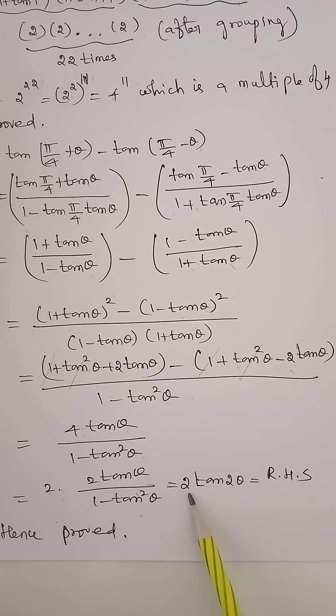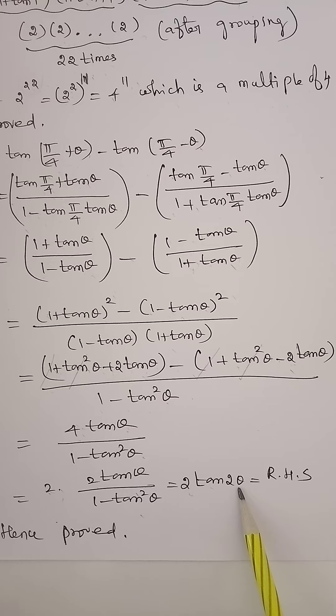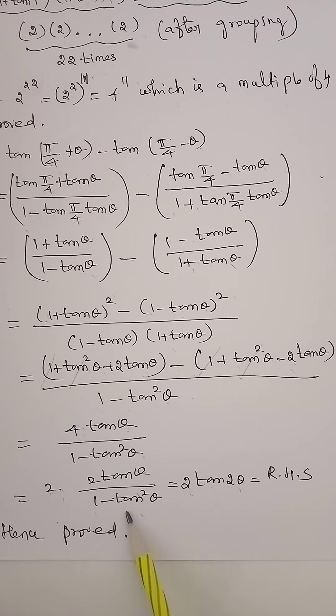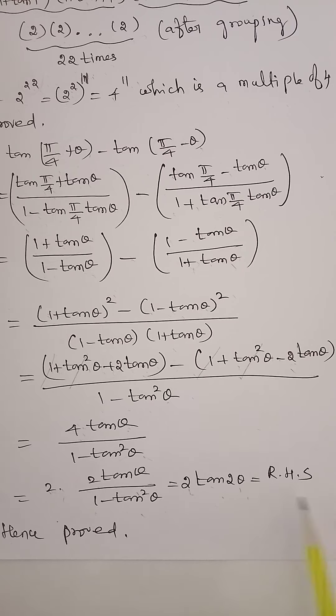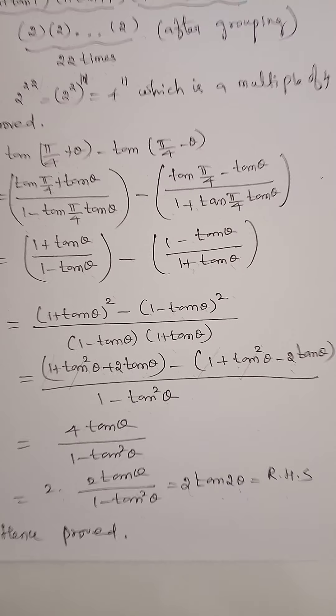We write 4 tan θ as 2 × 2 tan θ, so the expression becomes 2 × (2 tan θ / (1 − tan²θ)). Since the formula for tan 2θ is 2 tan θ / (1 − tan²θ), this equals 2 tan 2θ. Hence proved.